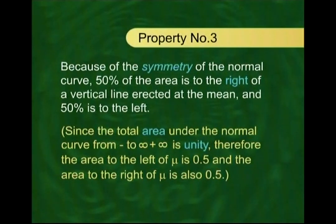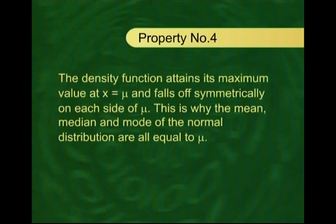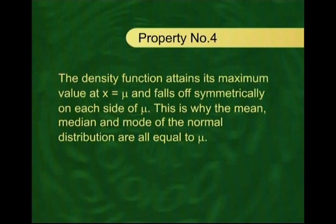The third property is that because the normal curve is absolutely symmetric around the mean, 50% of the area under the normal curve lies to the left of the mean and 50% to the right. Since the total area under the curve equals 1, the area from minus infinity to mu equals 0.5, and the area from mu to plus infinity is also 0.5. The density function attains its maximum value at x = mu, which is why the mean, median, and mode of the normal distribution are all equal to mu.